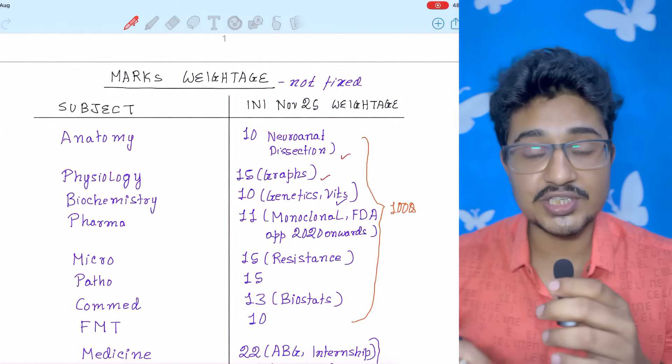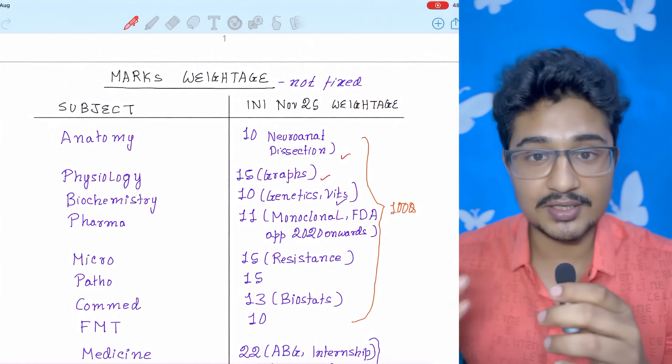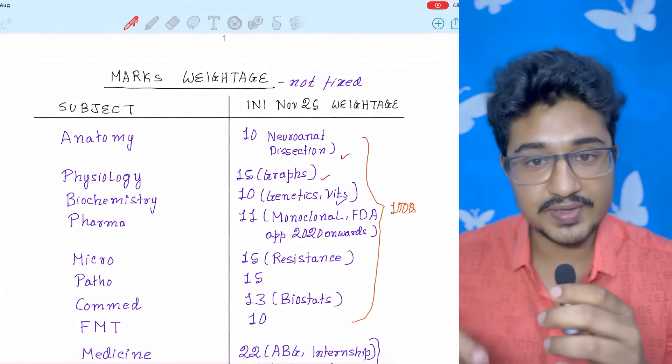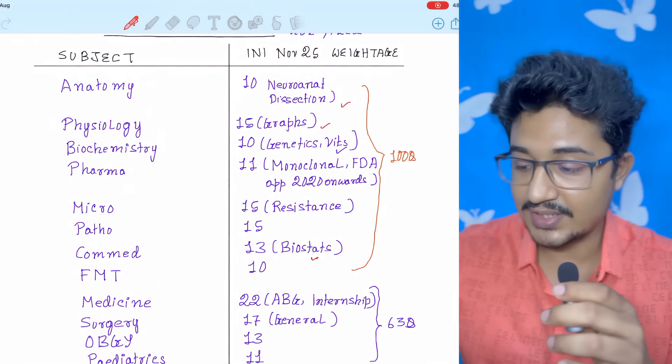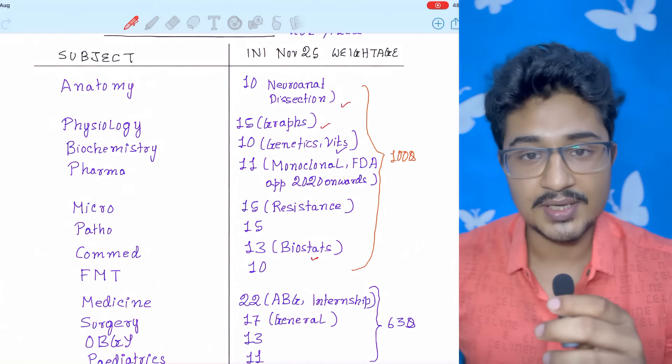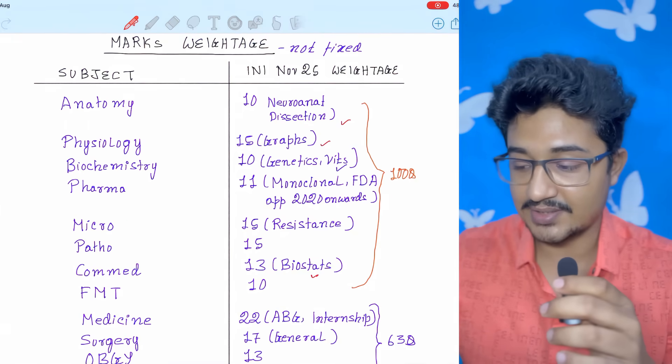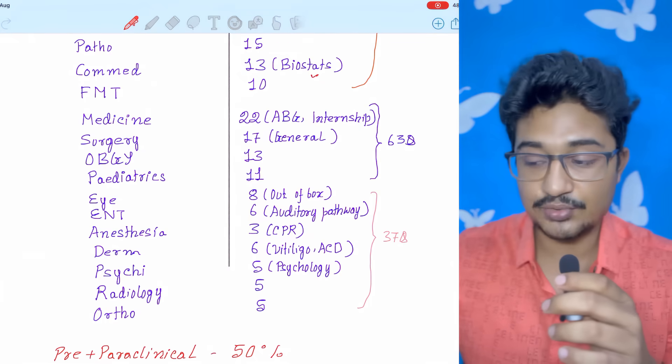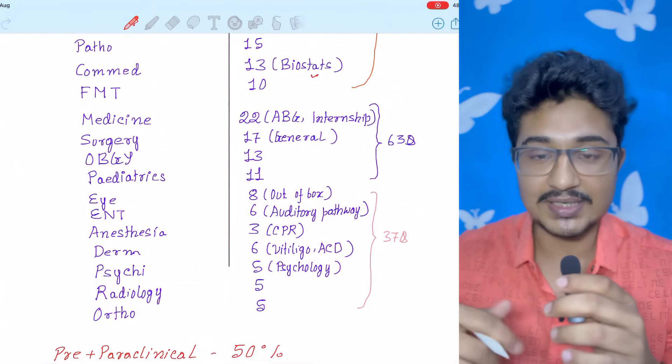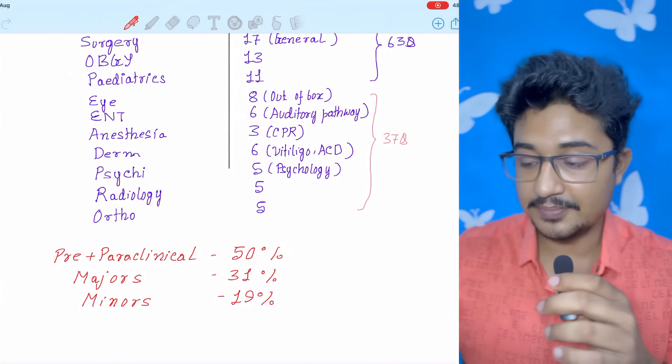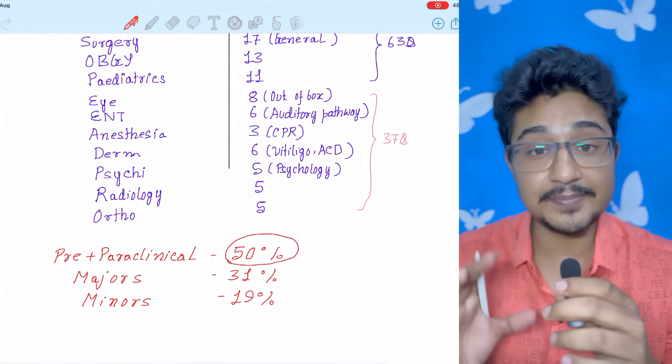But this marks weightage is not completely fixed like that of NEET PG. INICT marks weightage varies a lot. For example, in INICT 2024 May only two questions came from community medicine. But this year you can see 13 questions came from community medicine. So the marks weightage is not same, but mostly it is focused on pre and paraclinical subjects. If you want to take a screenshot, then you can take the screenshot or else I will give this PDF in my telegram channel. The link is given in the description box below. The main point I want to focus is that the pre and paraclinical subjects constitute 50% of the questions.